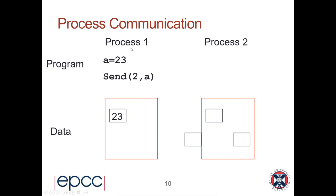The send function sends data a to process two. However, the program running on my laptop is not allowed to directly modify the memory of my collaborator's laptop in Australia. A good analogy is that the data goes into an inbox — like sending an email. Sending an email does not transfer the data unless the collaborator reads it. The equivalent in message passing is that every send must have a corresponding receive — sending a message is an active two-sided process.